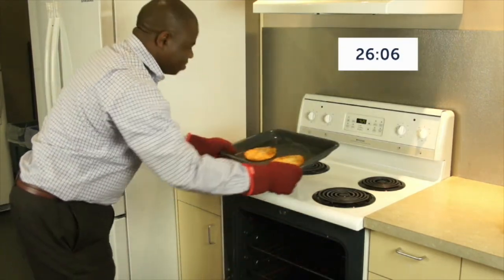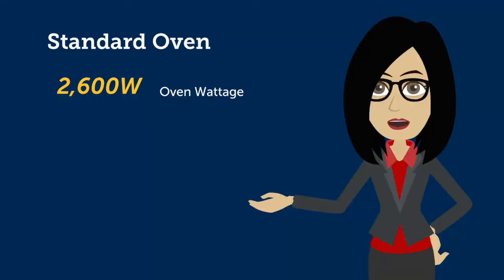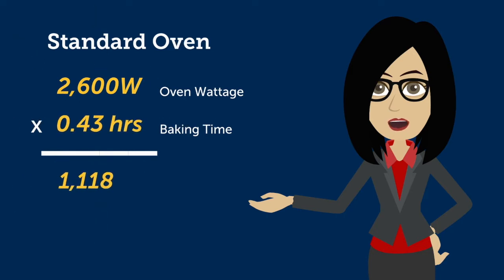We already found out the wattage of the oven. Multiply that by the time the oven was on for. Be sure to convert this into hours. Then, because we're talking kilowatts, we need to divide that number by 1,000.